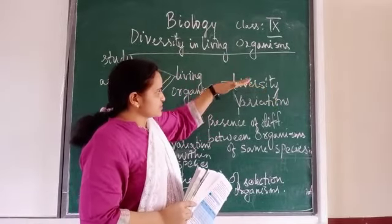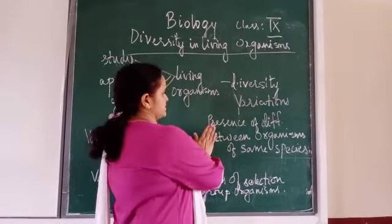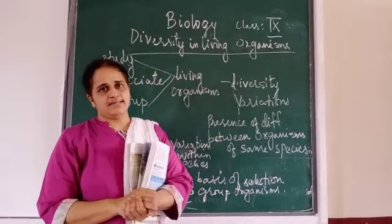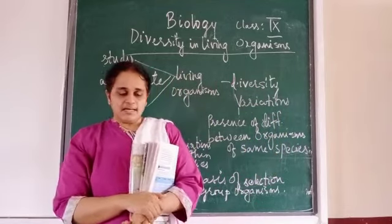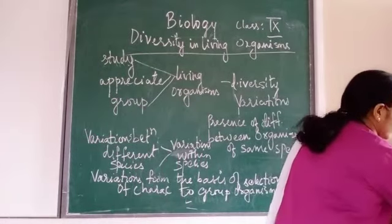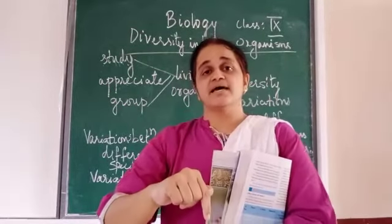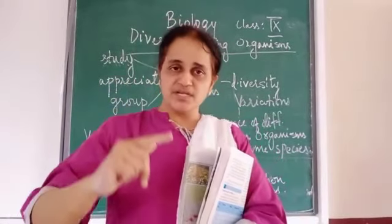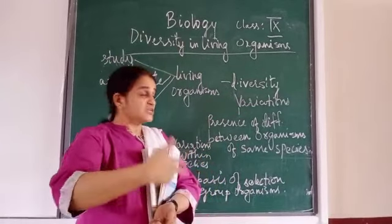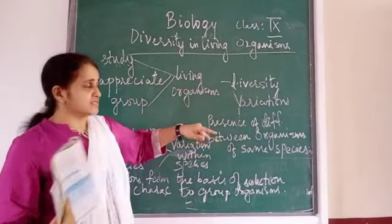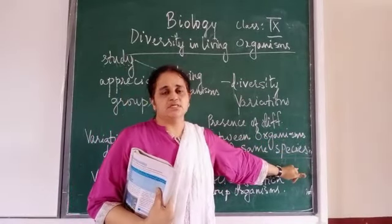Diversity, when I say, is based on variations. Now what is variation? Variation is the presence of differences between organisms of the same species. Like yesterday we saw hibiscus flower and rose flower. These two flowers belong to different groups. Though they may have some similarity, there is a greater number of variations. These variations increase as we go from one species to another species. Presence of differences between organisms of the same species is called variations.